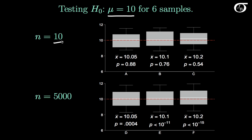In this first set of box plots, the sample size is 10 for each of the three samples. I've plotted in the hypothesized value of 10 here with a red line. The first sample had a sample mean of 10.05, the second one had a sample mean of 10.1, and the third one had a sample mean of 10.2.